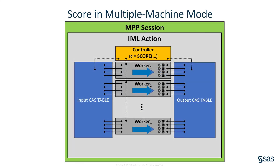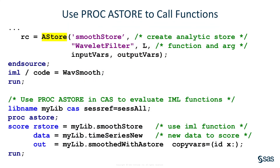This computation occurs in a massively parallel manner, as indicated by the diagram on this slide. The input observations are read in parallel, the wavelet smoother is applied in parallel, and the output data table is written in parallel. You can also save the scoring code to an AStore, and then use PROC AStore at a later time to apply the wavelet transform to new data.